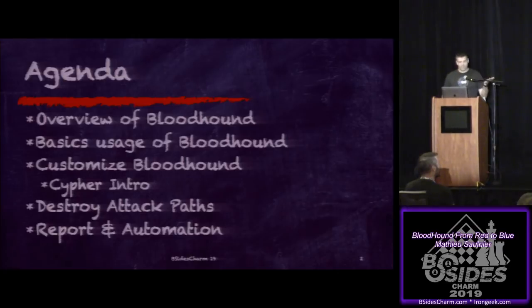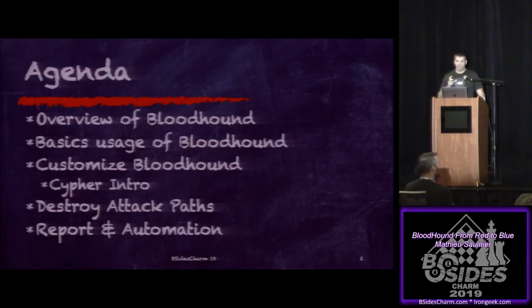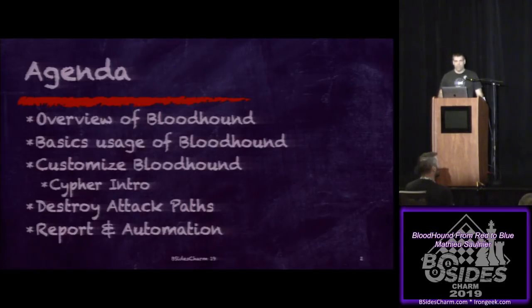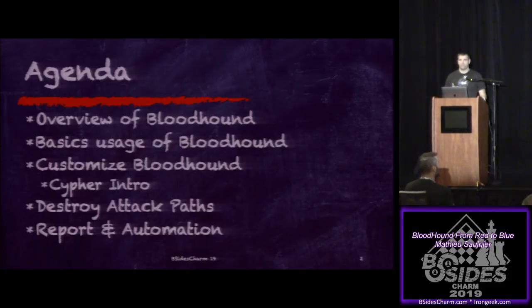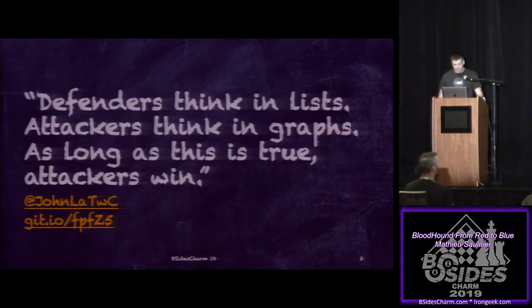A little bit of the agenda: we're going to do a quick overview of BloodHound, some basic usage, then start customizing BloodHound mainly using Cypher language. We're going to focus on destroying attack paths, and finally do some reporting and automation. A very famous quote from John Lambert of Microsoft: 'Defenders think in lists, attackers think in graphs. As long as this is true, the attacker wins.' But what does it actually mean?